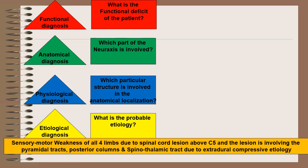Now coming to one example. If the case summary is sensory-motor weakness of all four limbs due to spinal cord lesion above C5, and the lesion is involving pyramidal tracts, posterior columns, and spinothalamic tracts due to extradural compressive etiology.